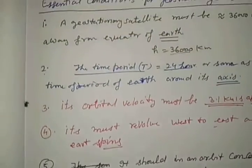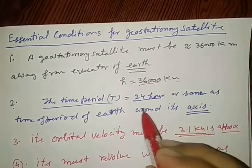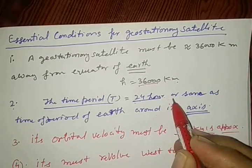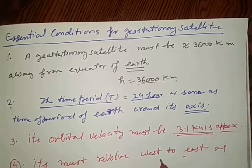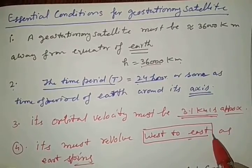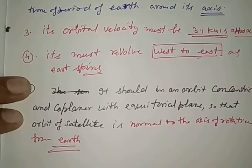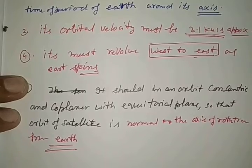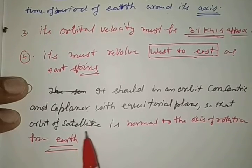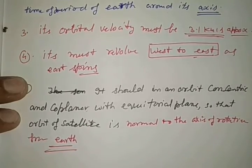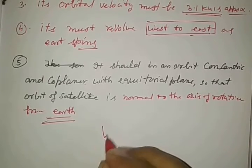See here these five points: height 36,000 km, time period 24 hours, orbital velocity 3.1 km per second, revolve West to East, and while it rotates its center should not be changed and it should be always coplanar with equatorial plane so it always remains normal to the axis of rotation of the Earth. In that condition this is possible.